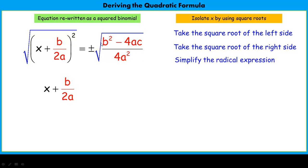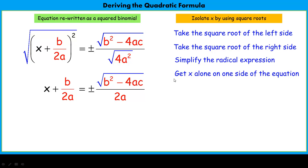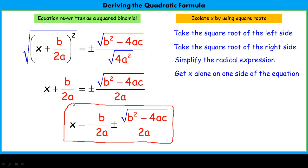Now we can simplify the radical expression. To take the square root of some fraction, it's the same as taking the square root of the numerator over the square root of the denominator. The square root of 4a squared is just 2a. Our next step is to get x alone. To get x alone, we need to subtract b over 2a from both sides. Now we are basically there. I've got x alone, and many people will use this as the quadratic formula, because this gives us a lot of information.